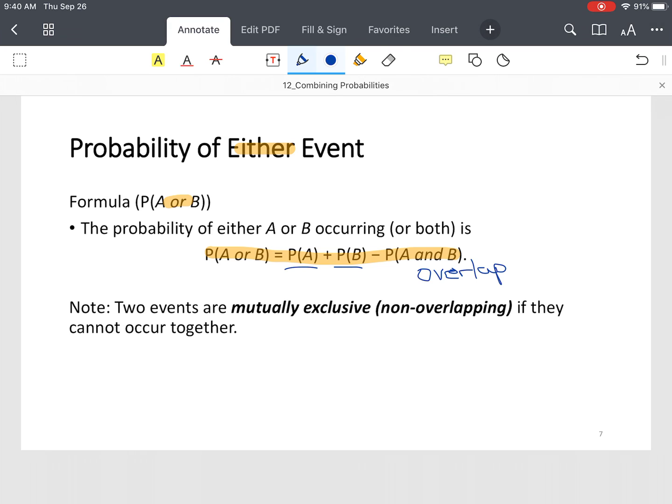So important definition here. You have what's called mutually exclusive or non-overlapping events. That definition simply says that both events cannot occur together. So we're going to always make that distinction as we go through solving probability questions for either or type events.